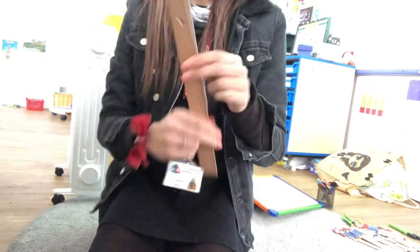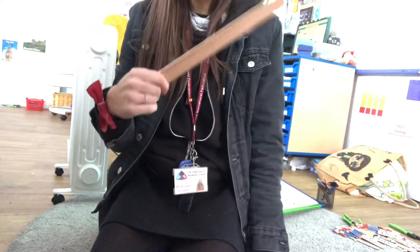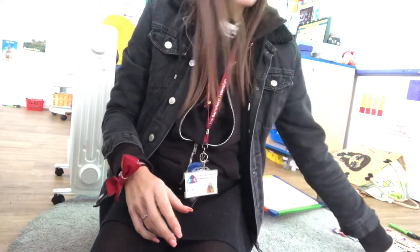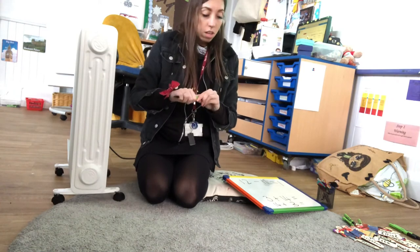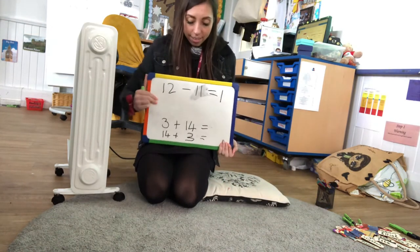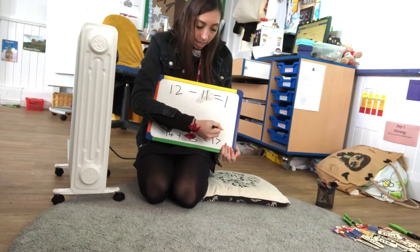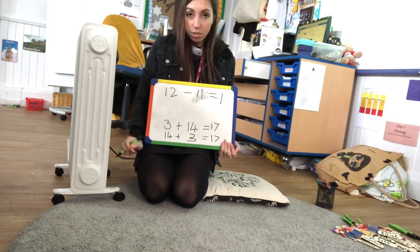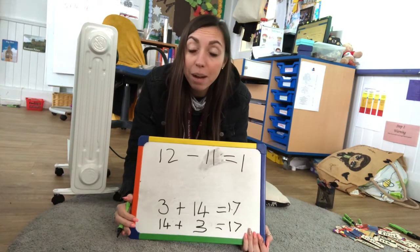It doesn't work for subtract, so don't do it for subtract. With subtract you can't change it around because the bigger number always comes first — unless we're going into negatives, which we're not. But with addition, if you switch the two around and start with the bigger number, it makes it a lot quicker. So that is how you would do that. I've now shown you it twice: 14 add 3 is the same as 17, and 3 add 14 is the same as 17. They're equal — they're part of a fact family.